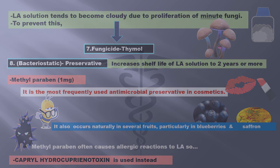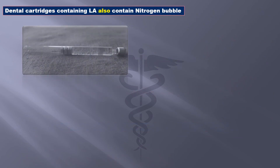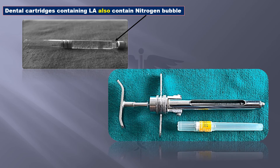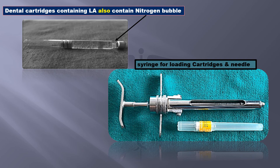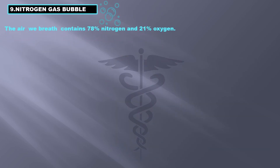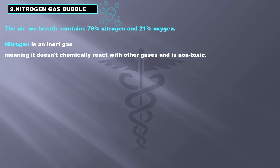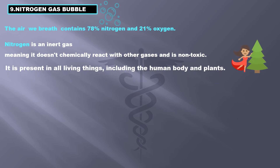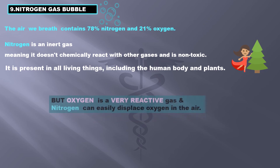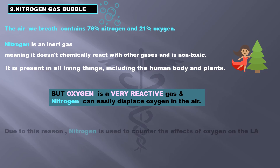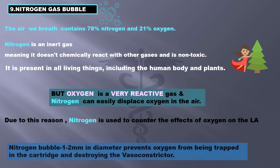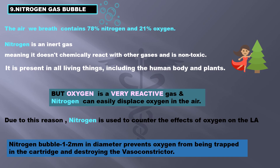Lastly, dental cartridges containing LA also contain small nitrogen bubbles, which you can see here. The air we breathe contains 78% nitrogen and 21% oxygen. Nitrogen is an inert gas — it doesn't chemically react with other gases and is non-toxic. It is present in all living things. Oxygen is very reactive, and nitrogen can easily displace oxygen in air. A nitrogen bubble 1–2 mm in diameter prevents oxygen from being trapped in the cartridge and destroying the vasoconstrictor.